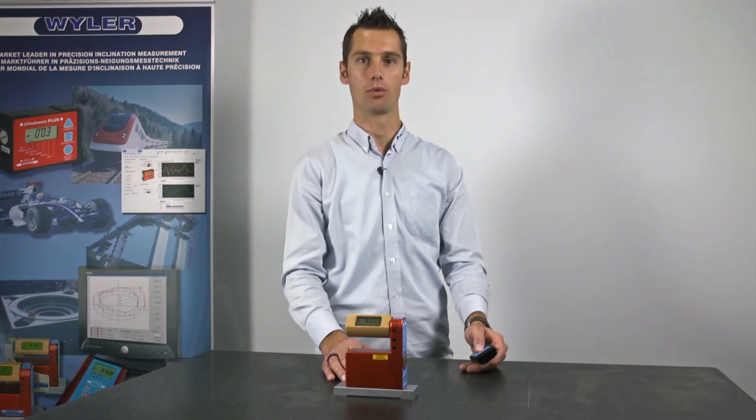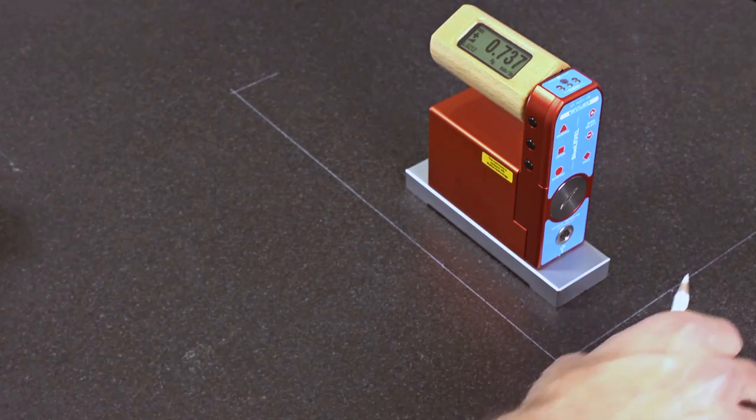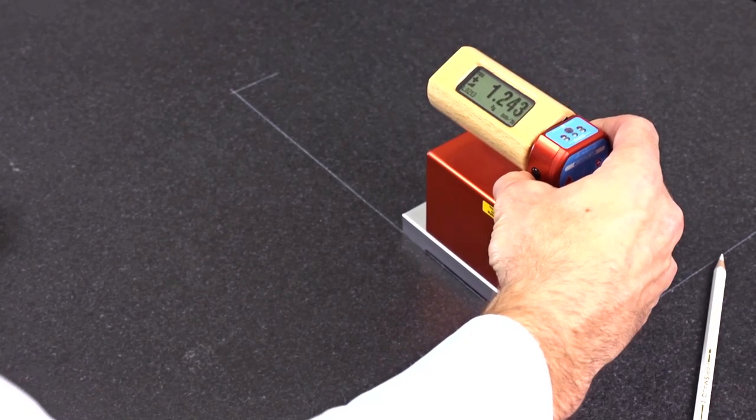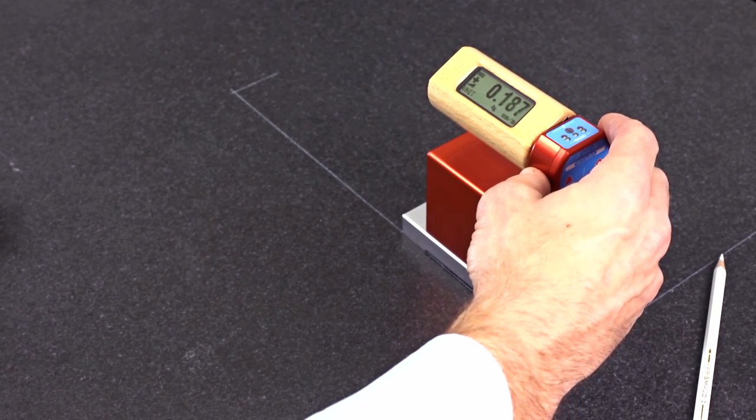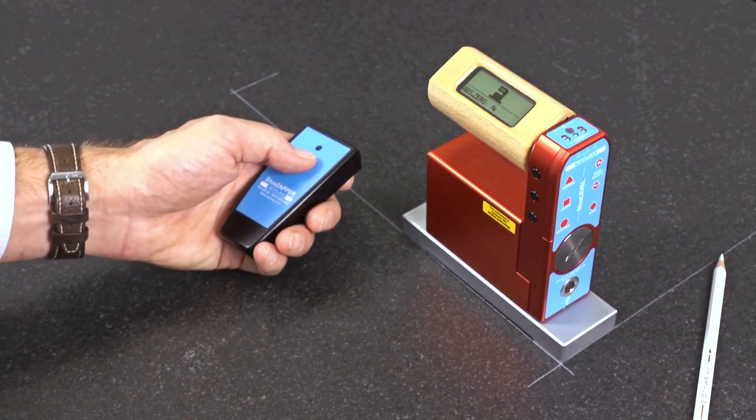Now I'm performing a reversal measurement. For the precise positioning of the measuring instrument, I've marked an auxiliary line. In the menu, I'm selecting the item Absolute Zero and I'm confirming it with the Enter key.